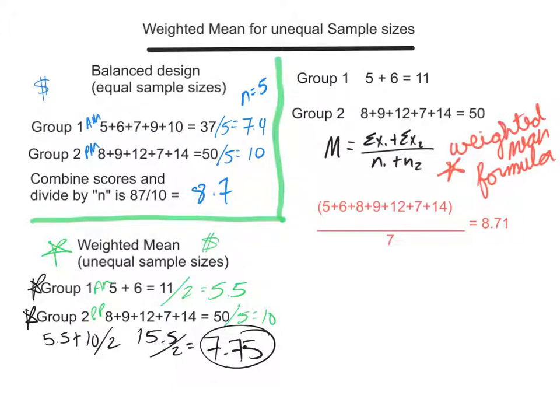Group 1 is my AM class and Group 2 is my PM class. Same amounts: I have one person with 5 dollars and one with 6 dollars (11 total), and 8, 9, 12, 7, and 14 (50 dollars) in my second class. This is your weighted mean formula you need to know: sum of x1 (11) plus sum of x2 (50) divided by n1 plus n2. If I take all these raw scores and divide by 2 plus 5, that's 7.